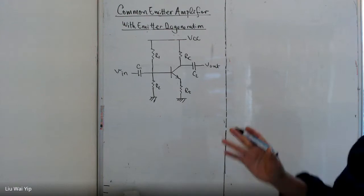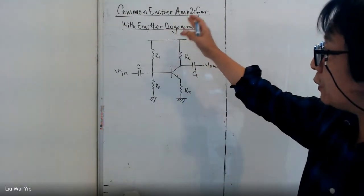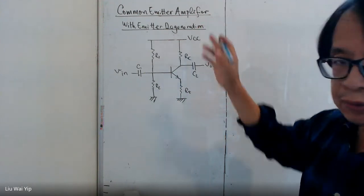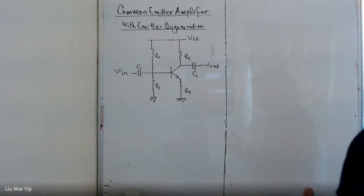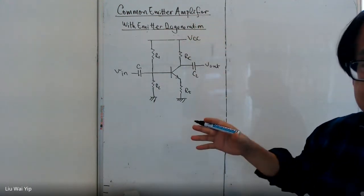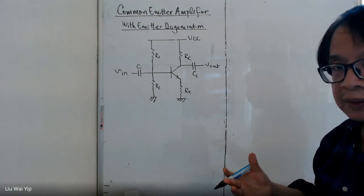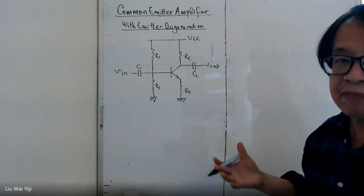Hello, everyone. This video is about common emitter amplifier with emitter degeneration. Previously, we have already made another video on the same topics, but we have used pi models to resolve it. Pi model is a bit complicated.